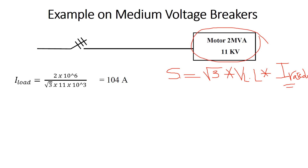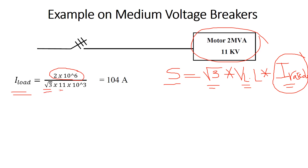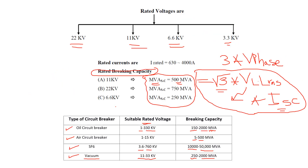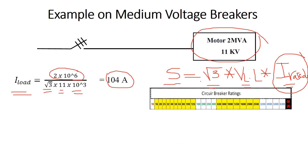Note that the rated current relates to rated power, while the breaking capacity relates to short circuit current. The rated current of the motor is: I = S / (√3 × V_LL) = 2 MVA / (√3 × 11 kV) = 104 A. Since medium voltage circuit breakers are rated from 630 A to 4000 A, we select the 630 A rating.